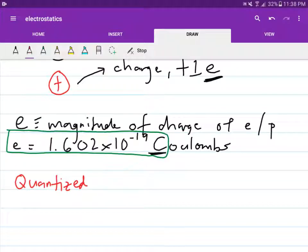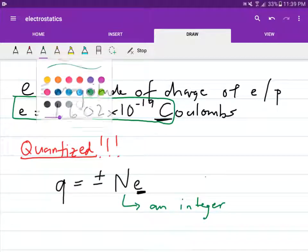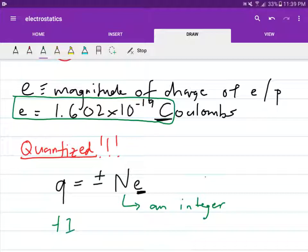And moreover, this value is quantized. So what does being quantized mean? It means that, say, for other objects that have higher charges, it can only occur with integer values of e. So N is an integer.